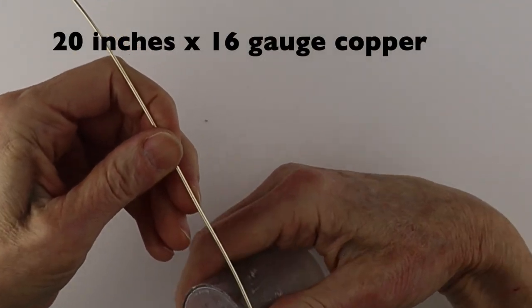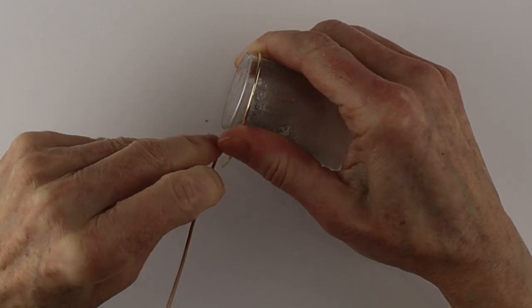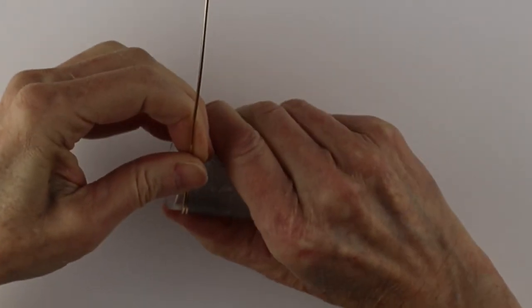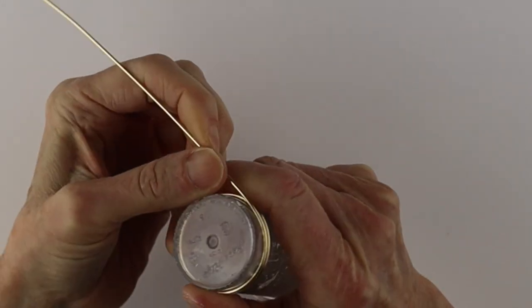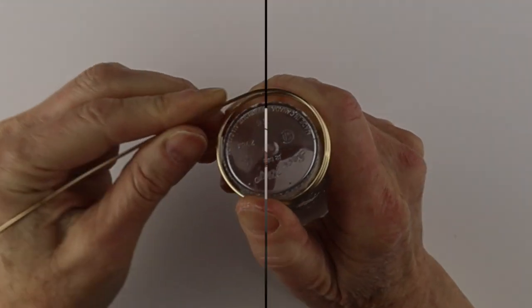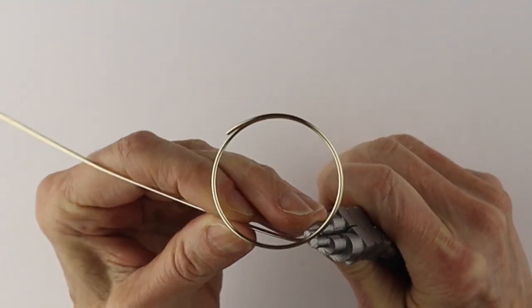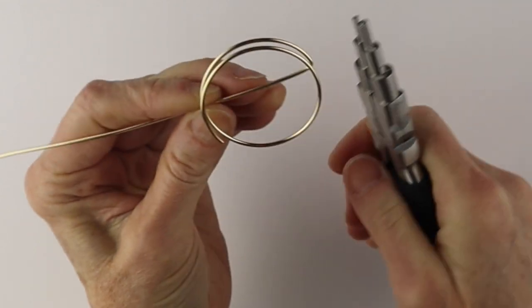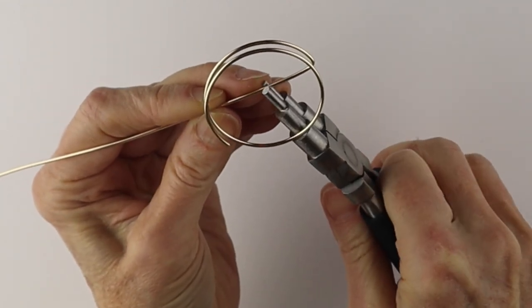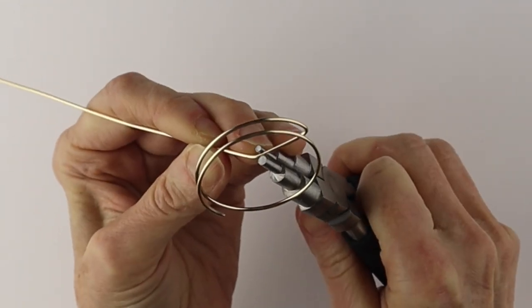I'm going to take a 20 inch piece of the 16 gauge wire and make a loop on one end. So this is going to be the base and then I'm going to take my looping pliers and bend the wire straight across the middle and then straight up in the center.